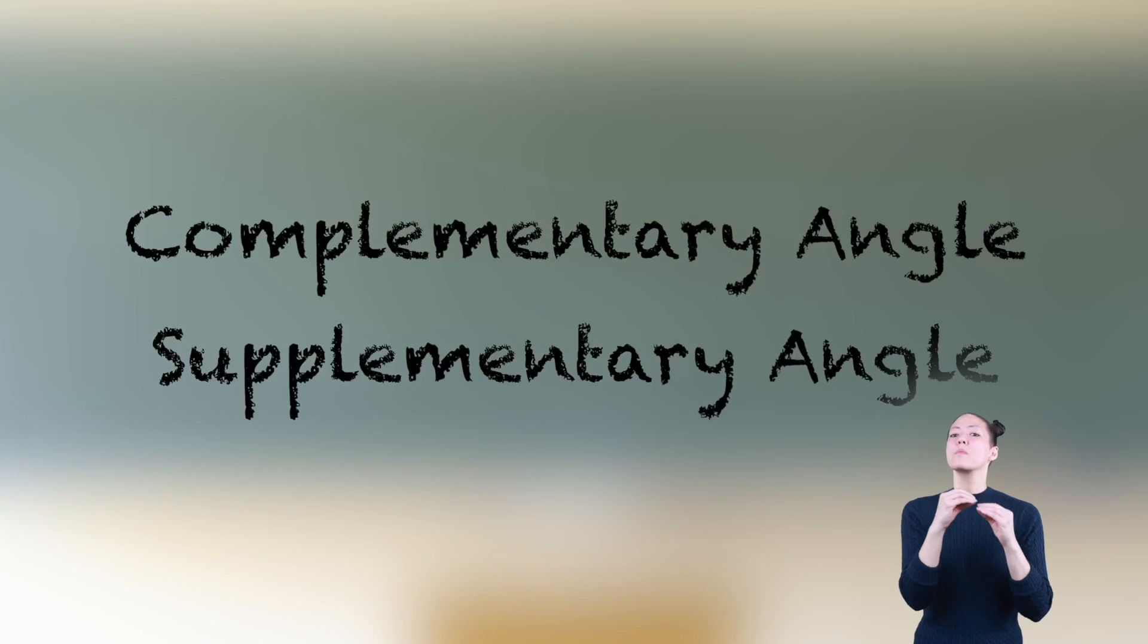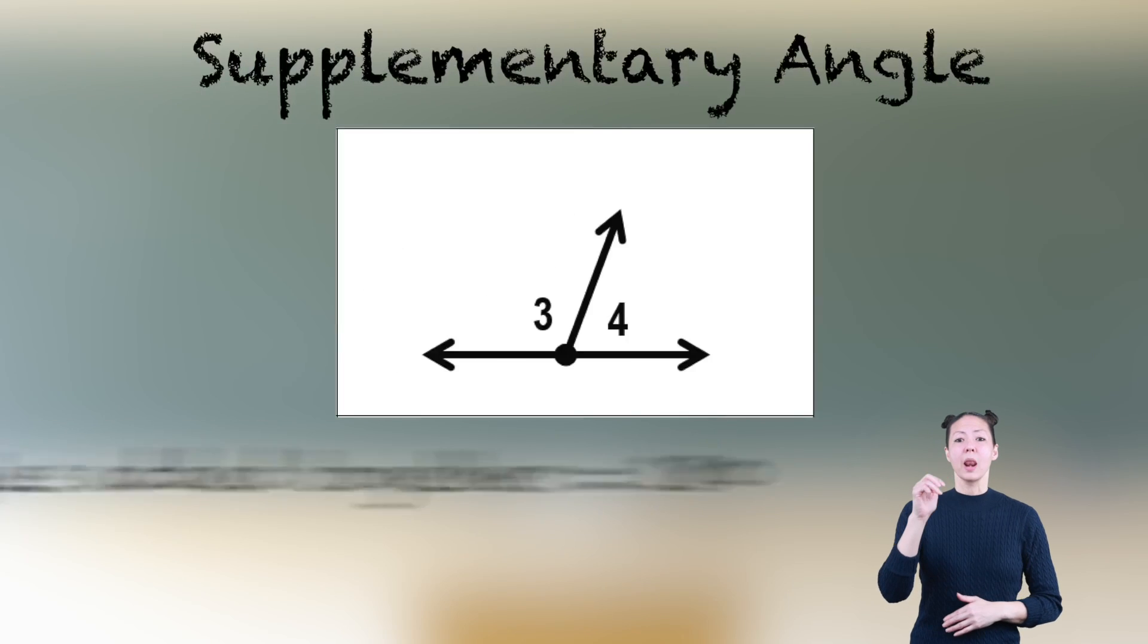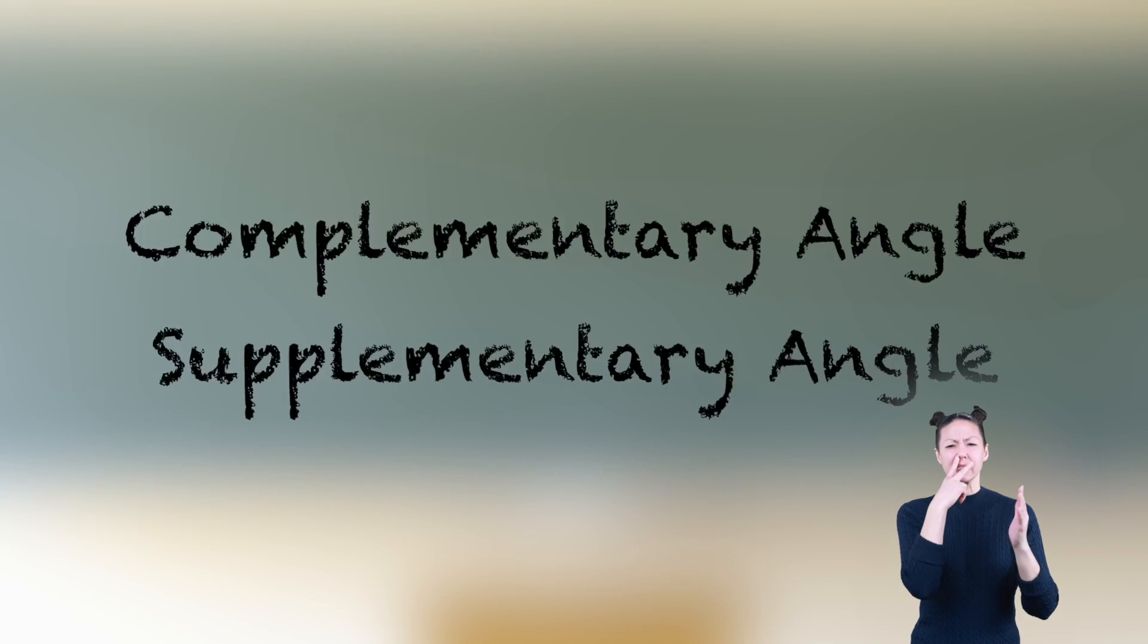Finally, there are two more terms for identifying angles when you add measures of two different angles. Complementary angles are two angles that add to 90 degrees. Supplementary angles are two angles that add to 180 degrees. Here are some examples.